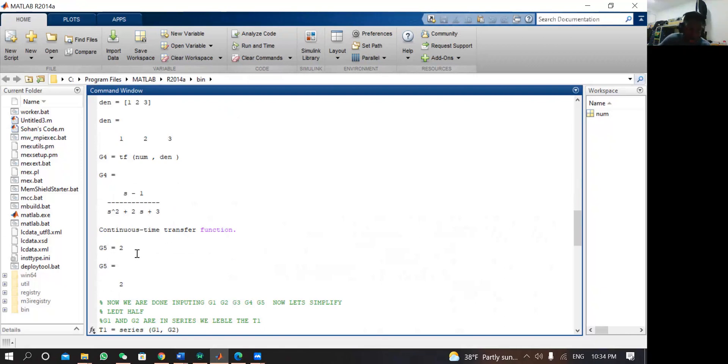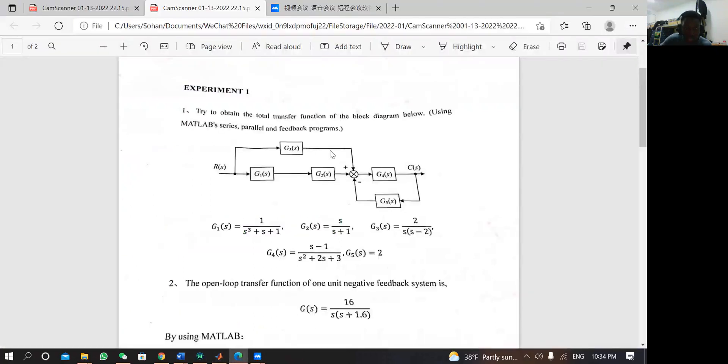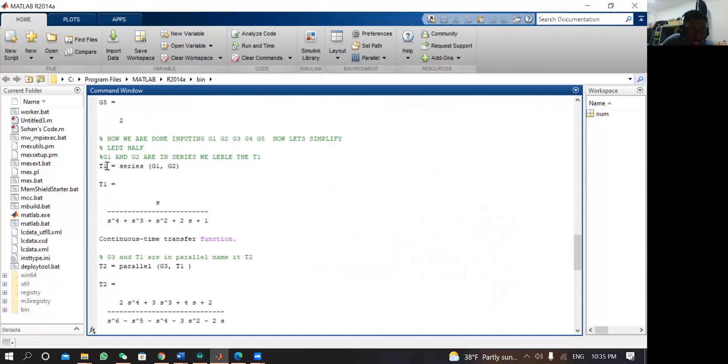G5 is a constant which is 2, we just write G5 equals 2. Now we are done inputting G1, G2, G3. Now let's simplify the left half. We are going to simplify this part. This transfer function and this model are in series, so we are going to add the two of them in series. In series we multiply. The code says T1 equals series(G1, G2). T1 is the result for the series combination of G1 and G2.